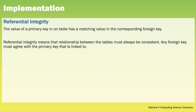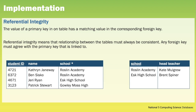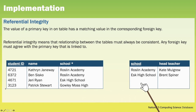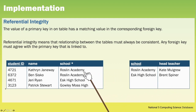Once we have designed our database, we can then implement it using our chosen database management system — this could be something like Microsoft Access or MySQL. Referential integrity ensures the value of a primary key in one table has a matching value in the corresponding foreign key, meaning the relationship between the tables must always be consistent. For example, Patrick Stewart attends Goakley Moss High School, however as the school is the foreign key it must match with an associated primary key, and there is no Goakley Moss High in the school table. Another example: if Roslyn High School was deleted, then the information about Catherine and Ben would also be deleted.